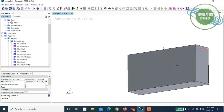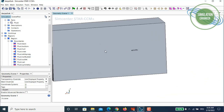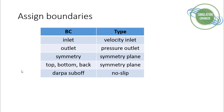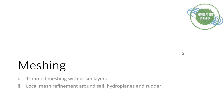Before diving into the meshing session, let me show some slides on the meshing approach. I'll use a trimmer meshing strategy, which is well suited since the flow is fairly aligned. For more complex geometries I prefer polyhedral meshes, but for this test case — and even for free surface simulations — trimmer meshing is preferred. I'll combine it with prism layers and local mesh refinement around the appendages: sail, hydroplanes, and rudder.